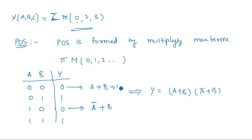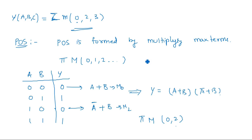In POS, we give priority to the 0s in the output, whereas in SOP we give priority to the 1s. In POS, if a variable bit is 0, it is taken in true form; if it is 1, it is taken in complemented form. This is opposite to the rule in SOP. These are the two important representations in Boolean algebra.